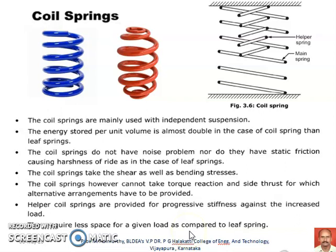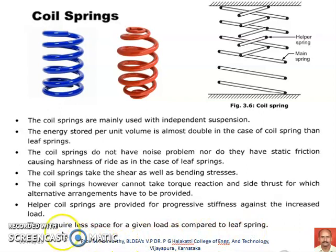Another advantage of coil springs is that they require less space for a given load compared to leaf springs. Particularly in cars or LMVs with front independent suspension systems, coil springs are most widely used. Whereas in the rear rigid axle suspension systems only we can find leaf springs, because of this basic advantage of coil springs requiring less space for a given load in comparison with leaf springs.